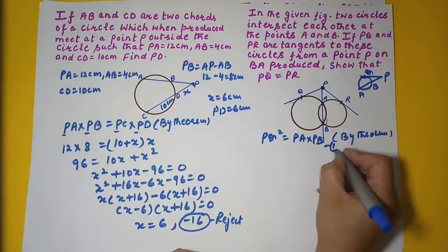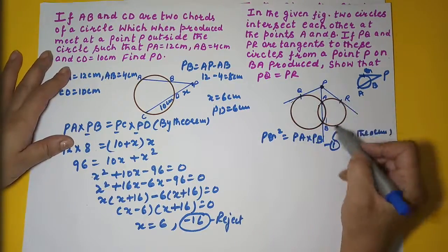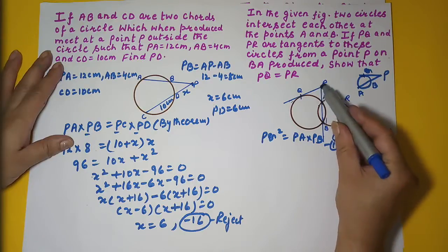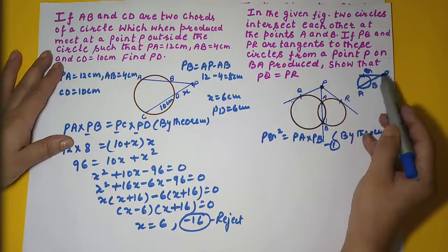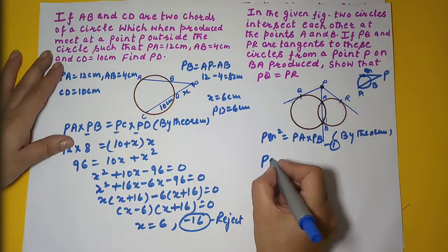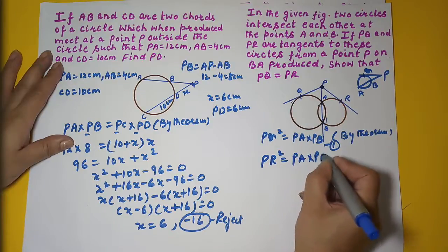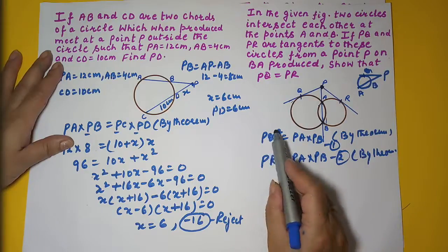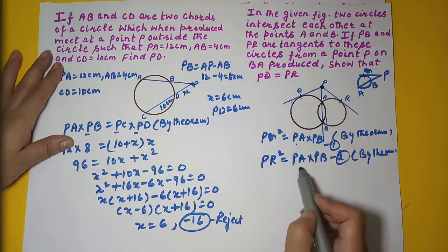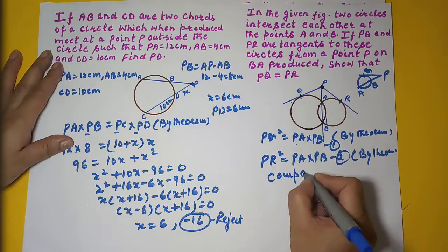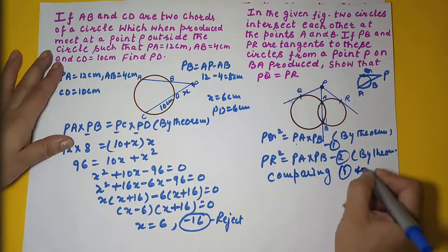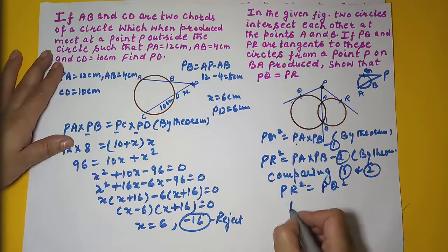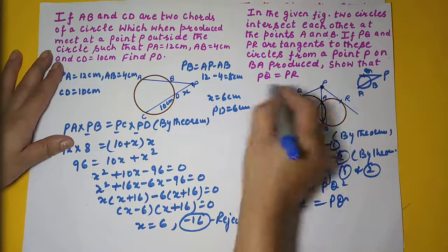Now forget the big circle and consider the smaller circle. Here PR is the tangent and AB is the chord, meeting externally at P. By the same theorem: PR² = PA × PB. This is equation two, by theorem. Comparing equations one and two: PQ² = PR², so taking square roots on both sides, PQ = PR. That's what we had to prove.